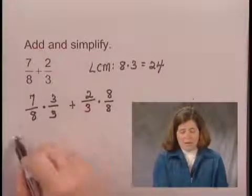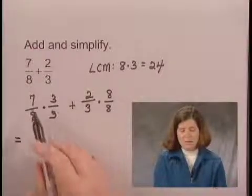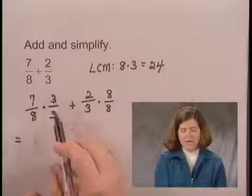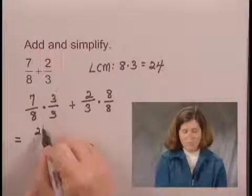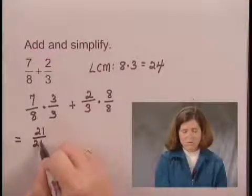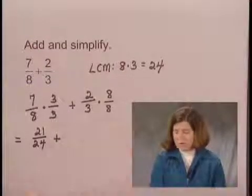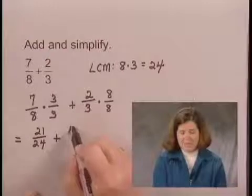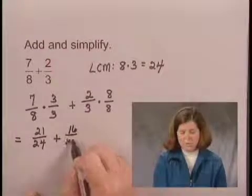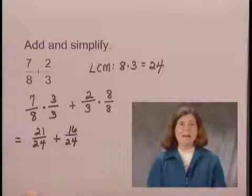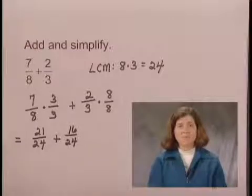Now, if I multiply 7 over 8 times 3 over 3, I get 21 over 24. Multiplying numerators, multiplying denominators. 2 thirds times 8 over 8 is 16 over 24. And now I have a common denominator of 24, so I can add the numerators.